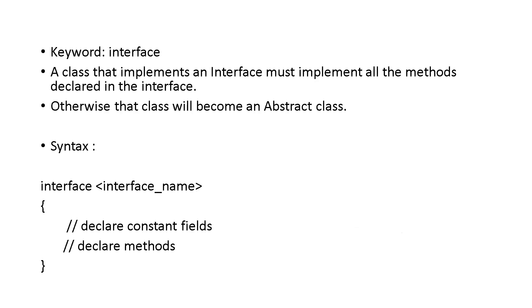The keyword used for an interface is 'interface'. This is the syntax: write the interface keyword, then the name of the interface, then open the curly bracket, declare the variables, declare the methods, and close the curly bracket. So you have created the interface.